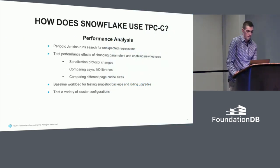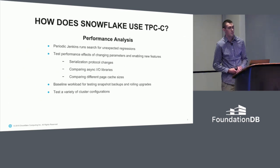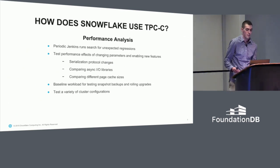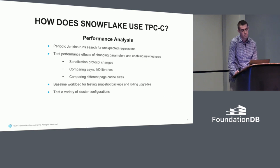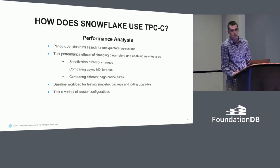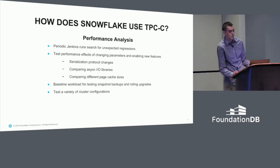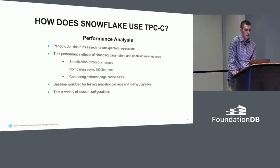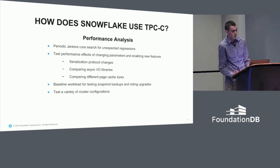So how do we use TPCC? We use it to analyze performance in a number of different ways. We have periodic Jenkins runs to search for unexpected performance regressions in our master branch. We also test the performance effects of enabling new features, such as our new serialization protocol which Andrew will be discussing next.